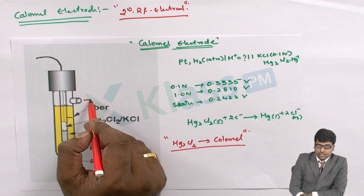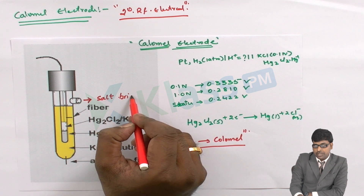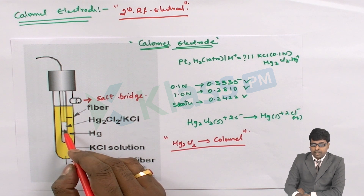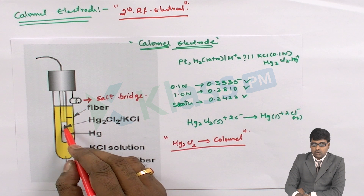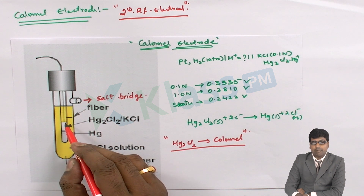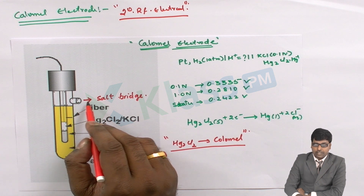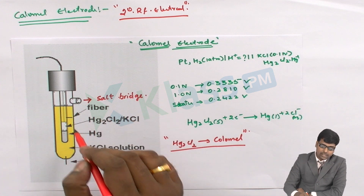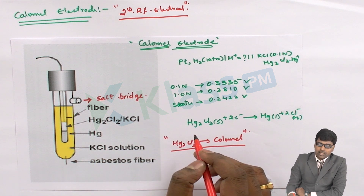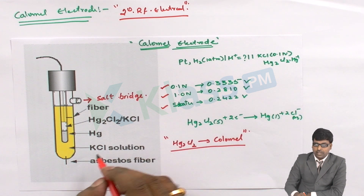An opening is used to attach this electrode to the salt bridge. So the layers are: a platinum rod, mercury, and a mercurous chloride layer. The whole setup is fixed into the KCl solution, which is covered with a thin membrane, and an opening is left at the top connected to the salt bridge. The electrode potential of the Calomel electrode varies with the KCl solution.